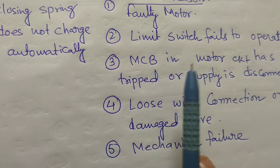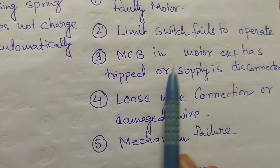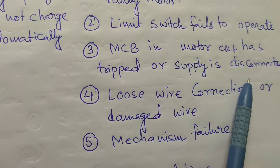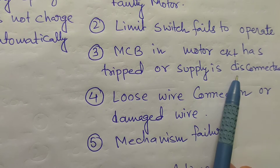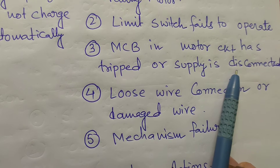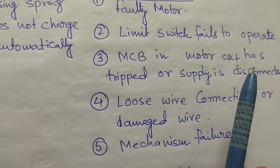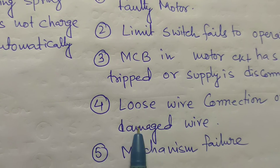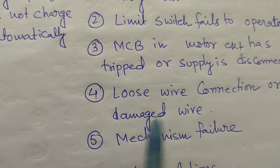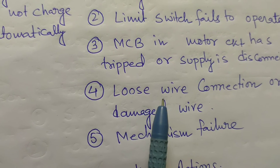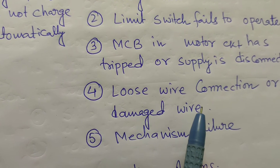If the MCB trips, switch it off and back on to normalize the motor circuit. The MCB of the motor circuit may have tripped, disconnecting the supply. Check the supply from the BMK box — if a fuse is blown, replace it. If the MCB or MCCB inside the BMK box has tripped, check and reset it to re-establish the motor circuit connection. Also check for loose wire connections or damaged wires, as wires may be burned or damaged due to short circuit faults.